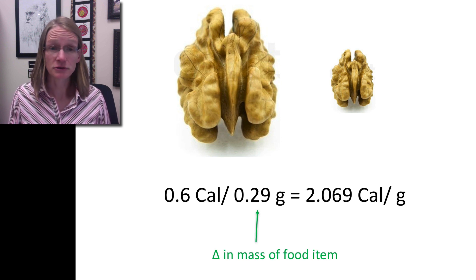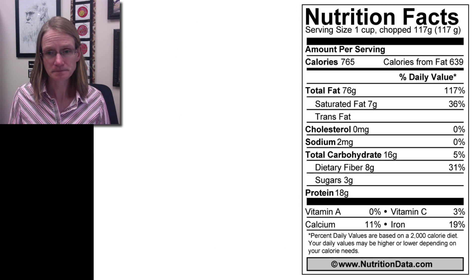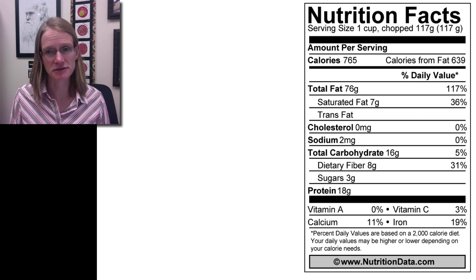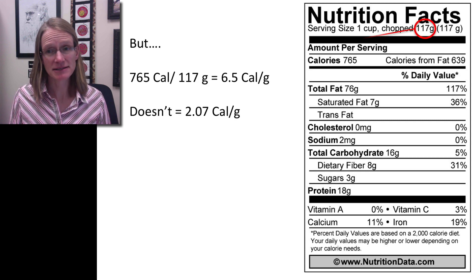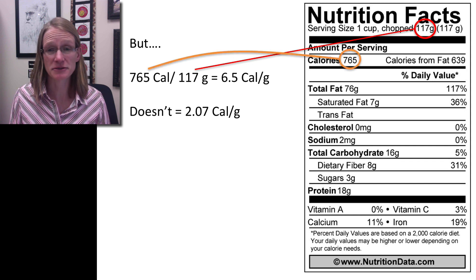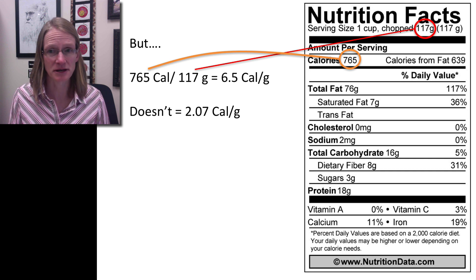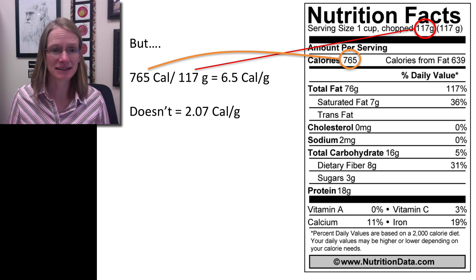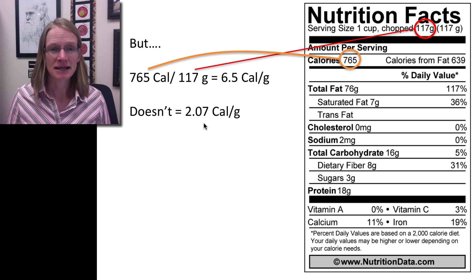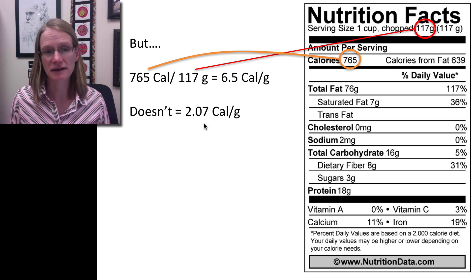However, if we actually go and we find a nutrition label for walnuts, we can see we get a little bit different story. Specifically, we can see that if we have the total grams and we have the total calories and we do the math, we can actually see that it tells us we have about six and a half calories per gram, which is actually significantly higher than what we just calculated. And so again, are we wondering are the nutrition facts leading us astray? And they're really not.